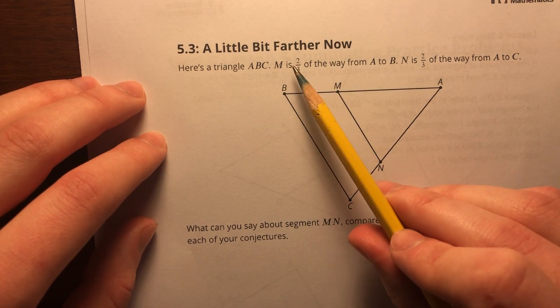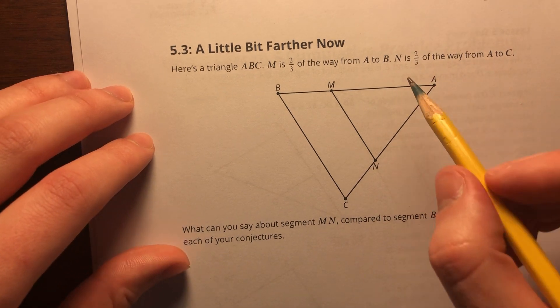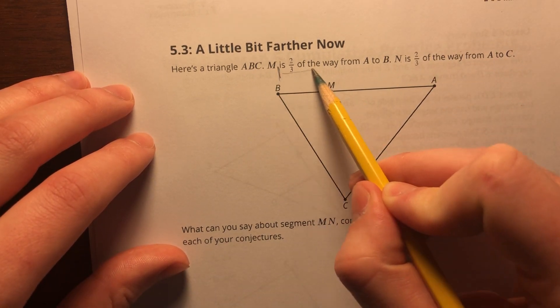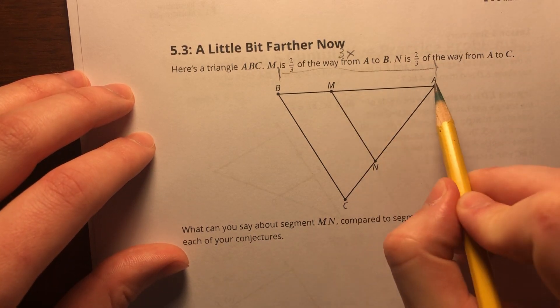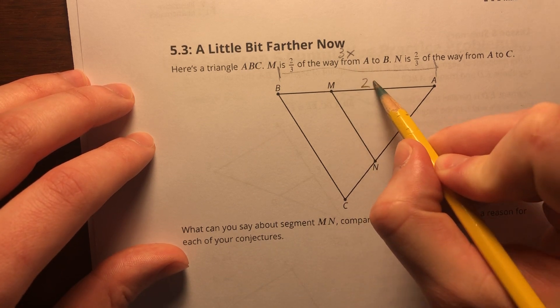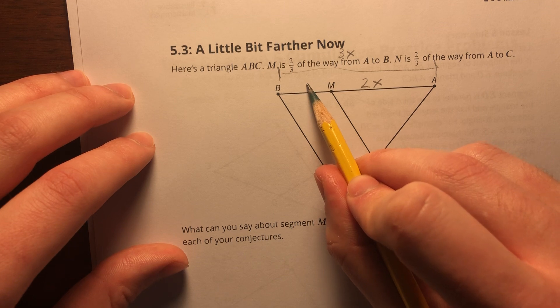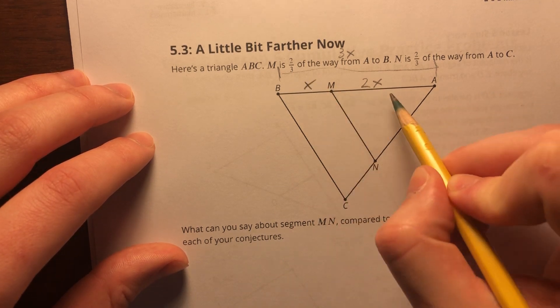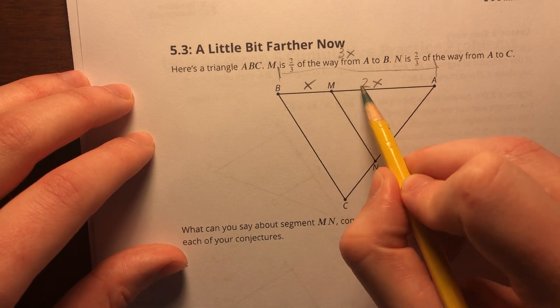So if M is two-thirds of the way from A to B, I can call this entire side AB 3x. If M is two-thirds of the way, then two-thirds of 3x is 2x. So that must mean my remaining side right here has got to be x, because 2x plus x equals 3x, and the whole must be the sum of my parts.